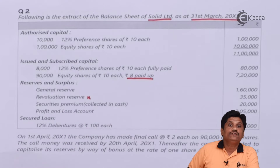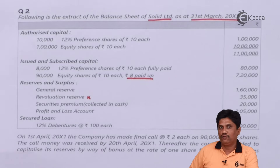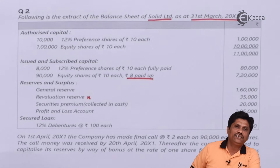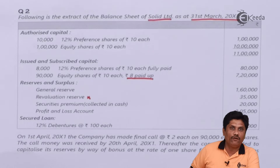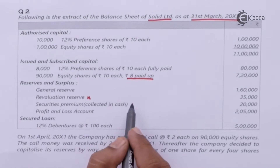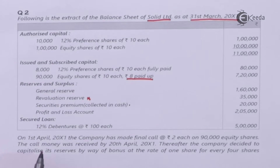Reserves and surplus include general reserve. Revaluation reserve — we will not use in any of our calculations; this reserve will be meaningless for all our calculations. It is there because we have revalued some assets; it is not actual profit. Security premium is collected in cash. Profit and loss account. Security premium will be used only as per its specification under Section 52. The secured loan is 12% debentures of ₹100.